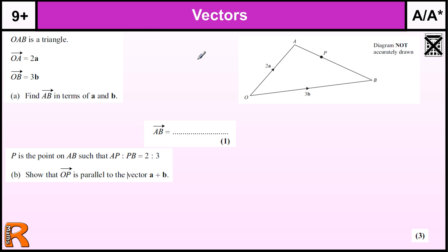So here we have a triangle. It's a pretty standard question, where OA, which we would normally call a, they're calling 2a, and OB they're calling 3b.